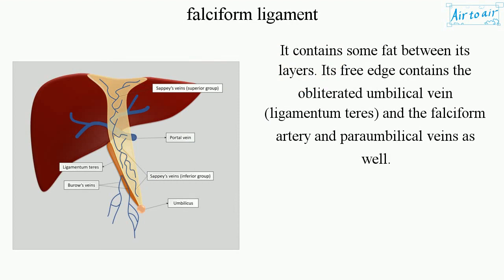Its free edge contains the obliterated umbilical vein, ligamentum teres, and the falciform artery and periumbilical veins as well.